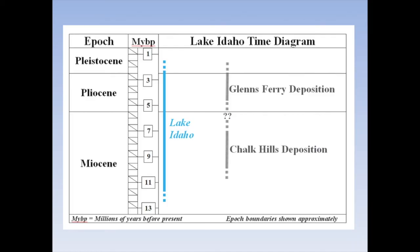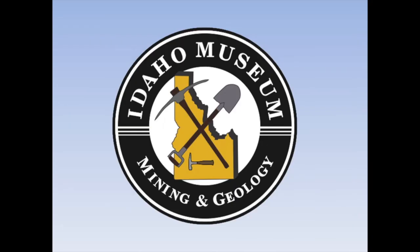So we've seen some of the sedimentary evidence for the existence of Lake Idaho. Even though the lake has long since vanished, plenty of indications still remain of its presence in the western Snake River Plain, if we take the time to look for it. Thanks for joining me on our field excursion, and be sure to visit the Idaho Museum of Mining and Geology to see additional evidence of ancient Lake Idaho. We'll see you next time.